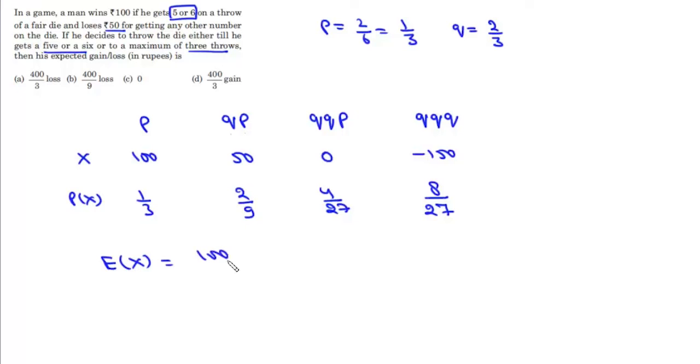So expected value of x will be 100. So expected value of this random variable x will be 100 by 3 plus 100 by 9 minus 1200 by 27.